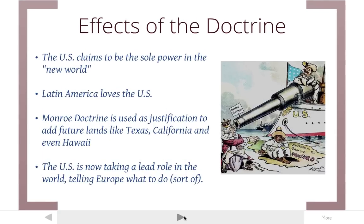So what happened because of the Monroe Doctrine? Basically the United States says: Europe, get out of North and South America, don't mess around with this area anymore — this is our area, we're the leaders of this place. The United States is going to claim to be the sole power in the New World, very different from previous years. Latin America is going to love the United States and look at it as its protector, and that's going to be a good relationship for a number of years. The Monroe Doctrine is also going to be used as a reason why the United States can acquire future lands like Texas and California from Mexico and even Hawaii later on.